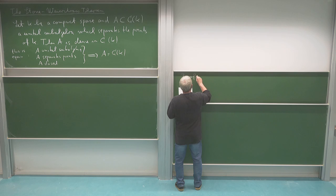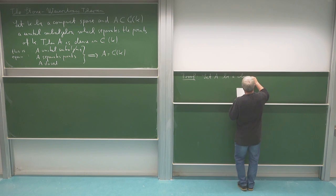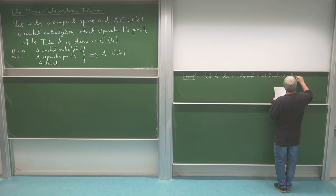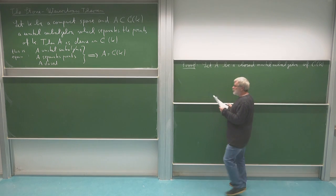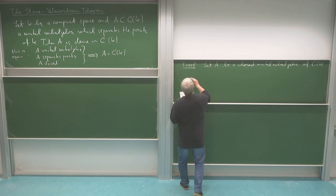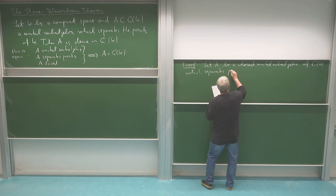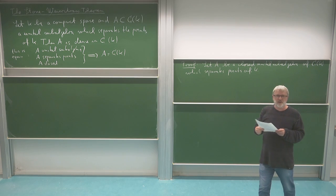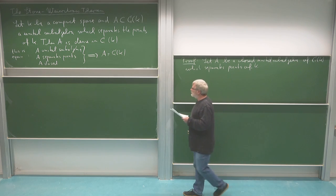Take such an A. Let A be a closed unital subalgebra of C(K), where K is our compact set, which in addition separates the points of K. It cannot be too small because it separates points, but we are claiming it must actually be very big — it must be everything. So how are we going to show this?